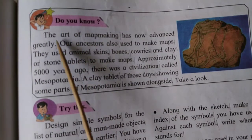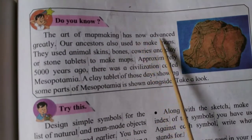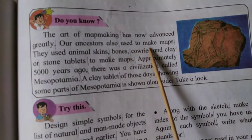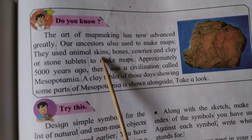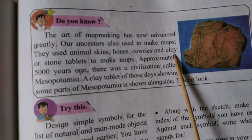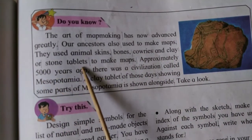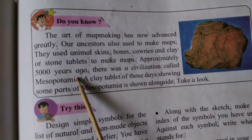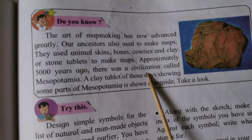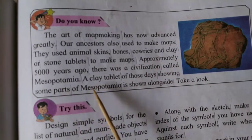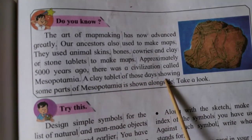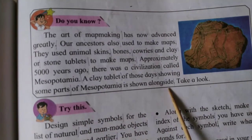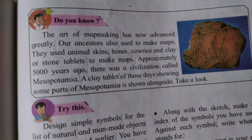Do you know the art of map making has now advanced greatly? Our ancestors also used to make maps. They used animal skins, bones, cowries, and clay or stone tablets to make maps. Approximately 5000 years ago, there was a civilization called Mesopotamia. A clay tablet of those days showing some parts of Mesopotamia is shown alongside. Take a look.